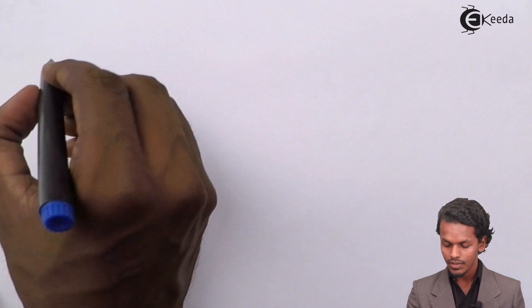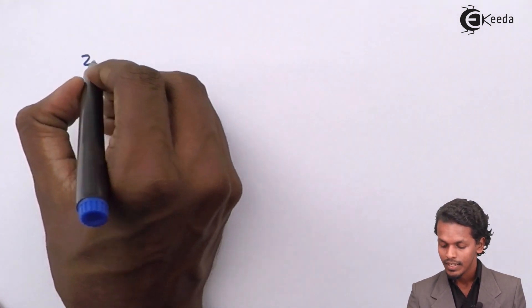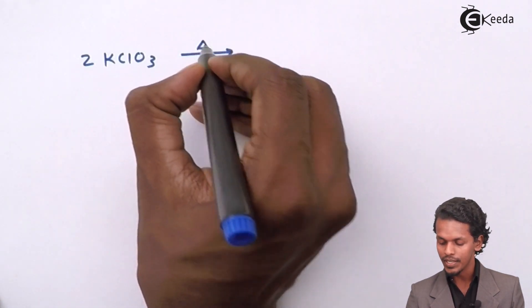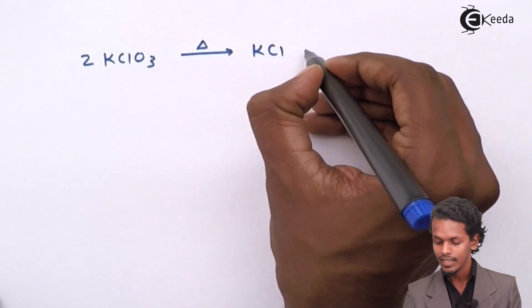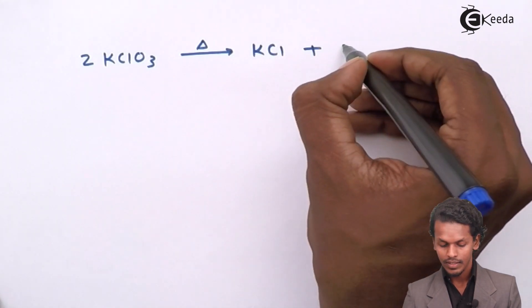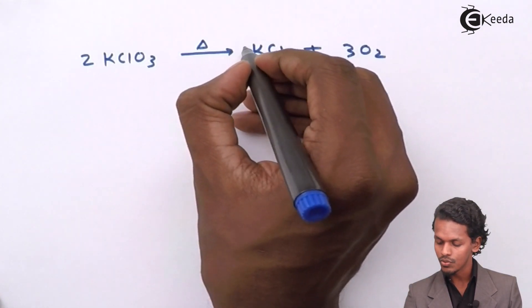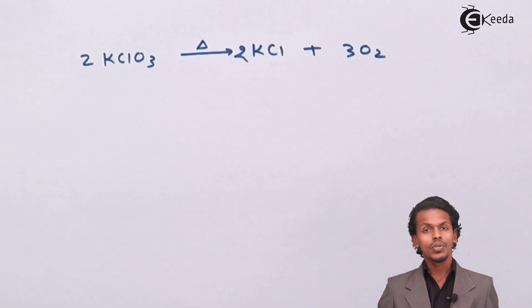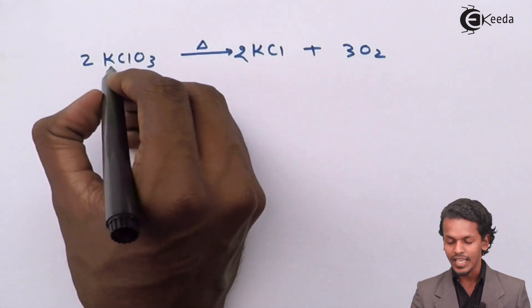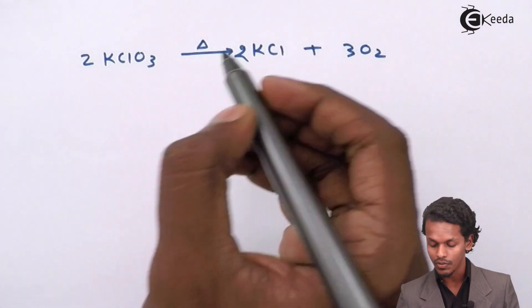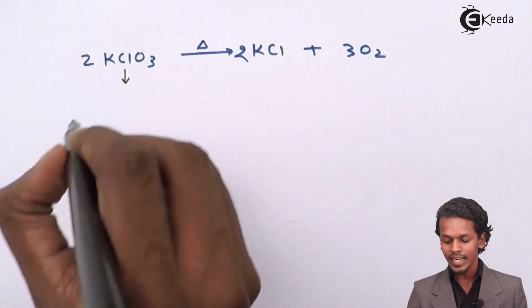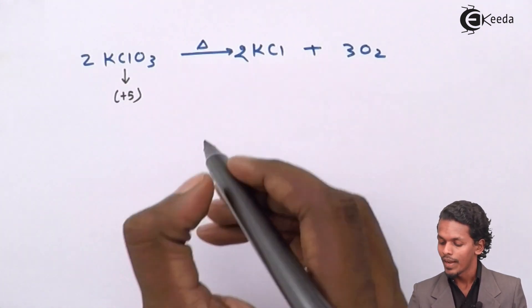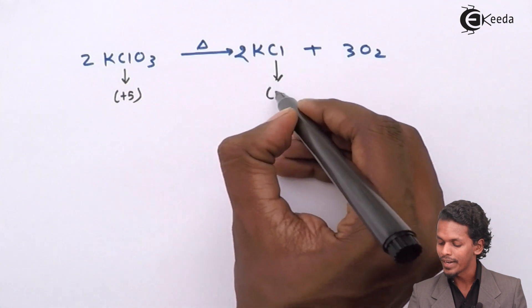The original reaction shows two moles of potassium chlorate undergoing thermal decomposition to give two moles of KCl and three moles of O₂. Potassium has an oxidation number of +1 in both reactant and product — it remains unchanged. However, the chlorine atom on the reactant side has an oxidation number of +5, while on the product side it has an oxidation number of −1.